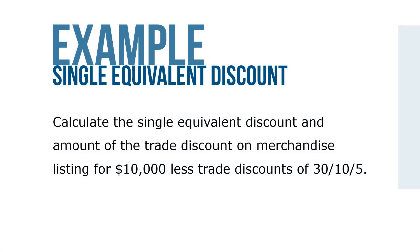Here's an example. Calculate the single equivalent discount and amount of trade discount on merchandise listing for $10,000 less trade discounts of 30, 10, 5.